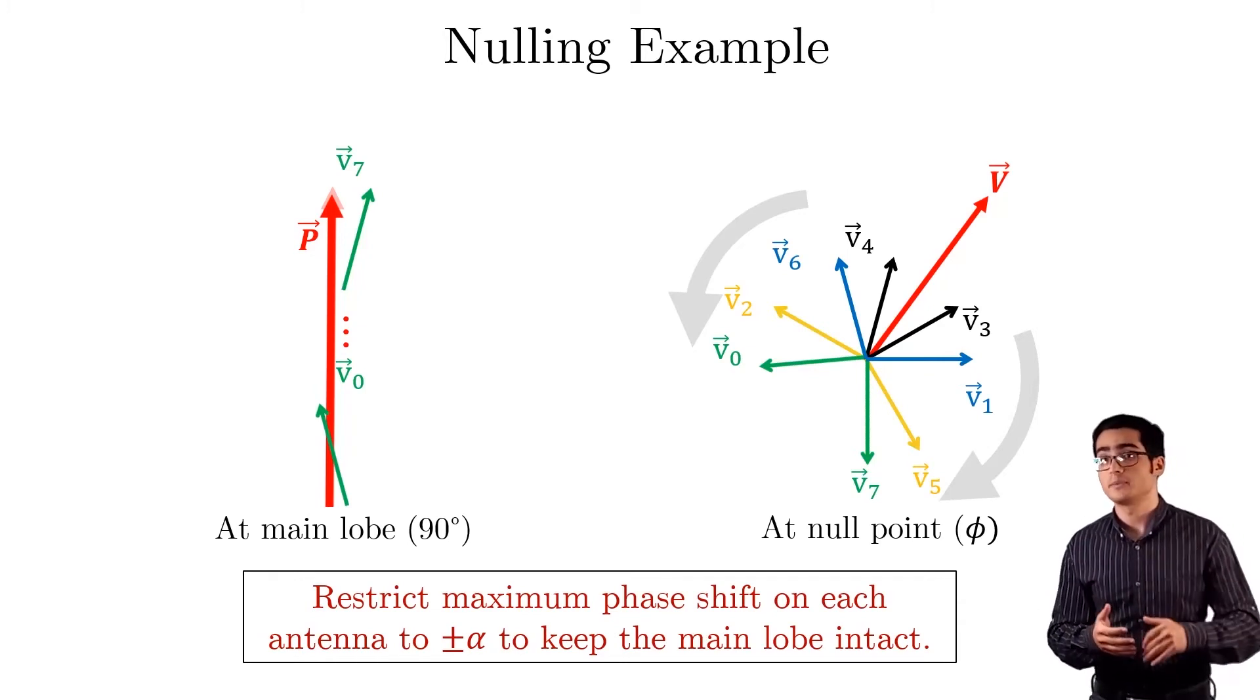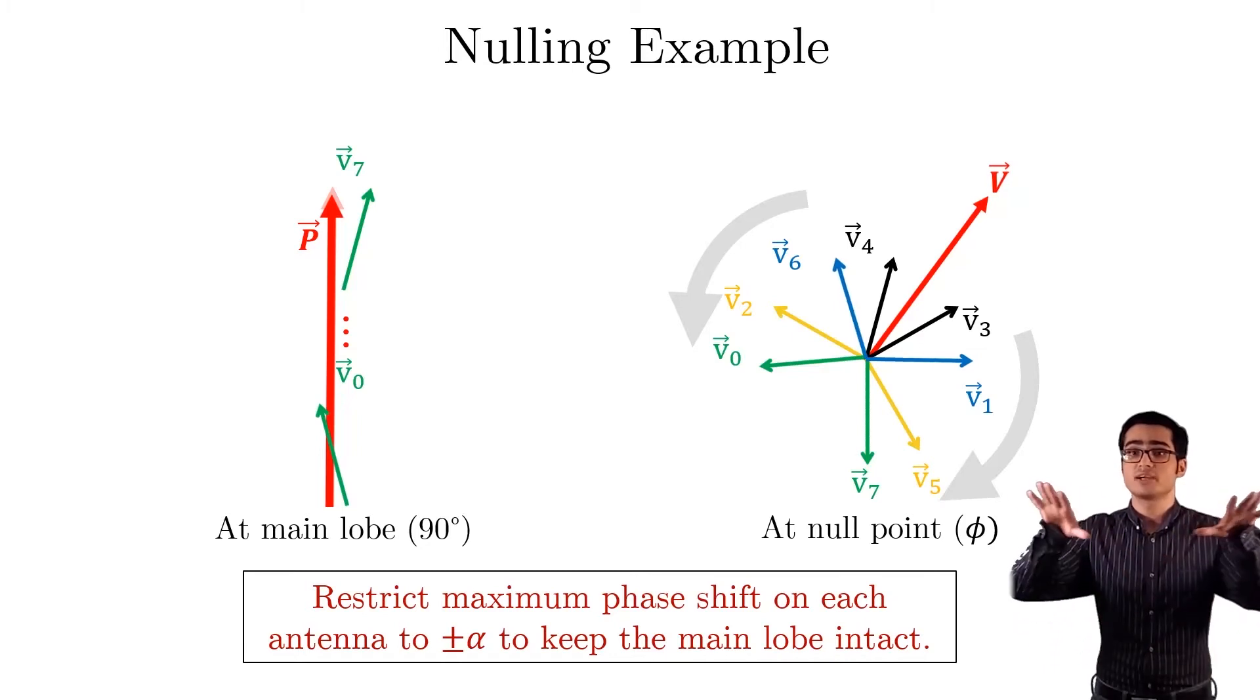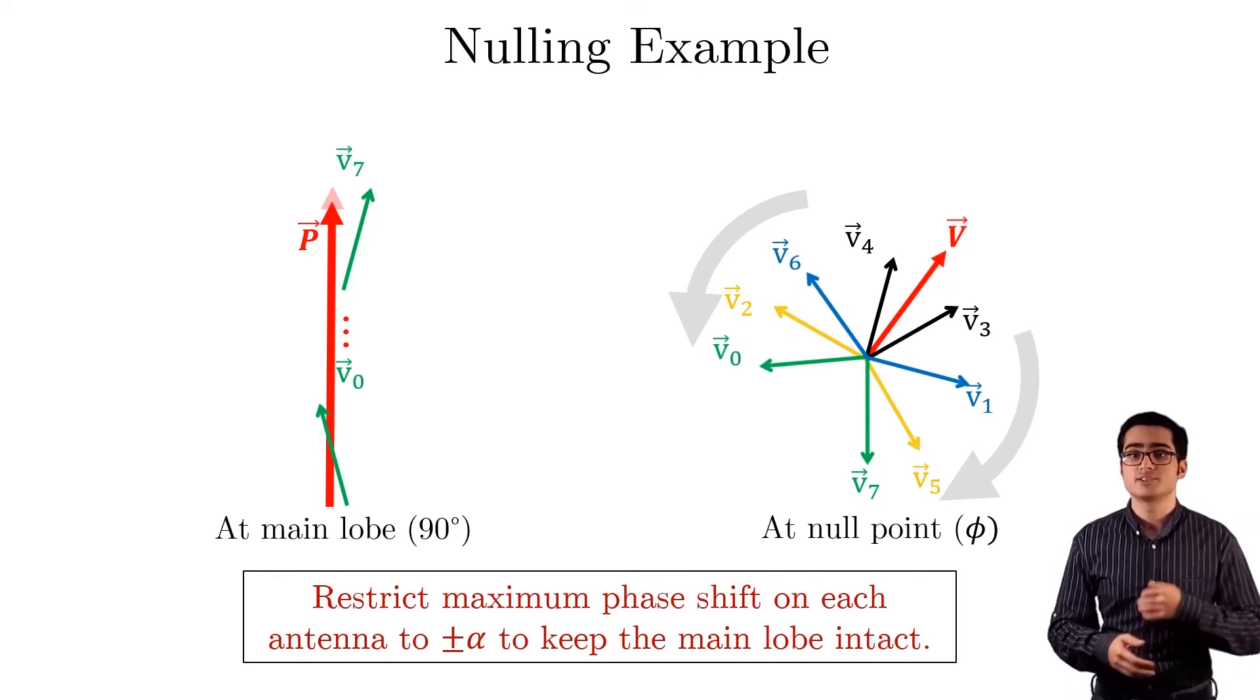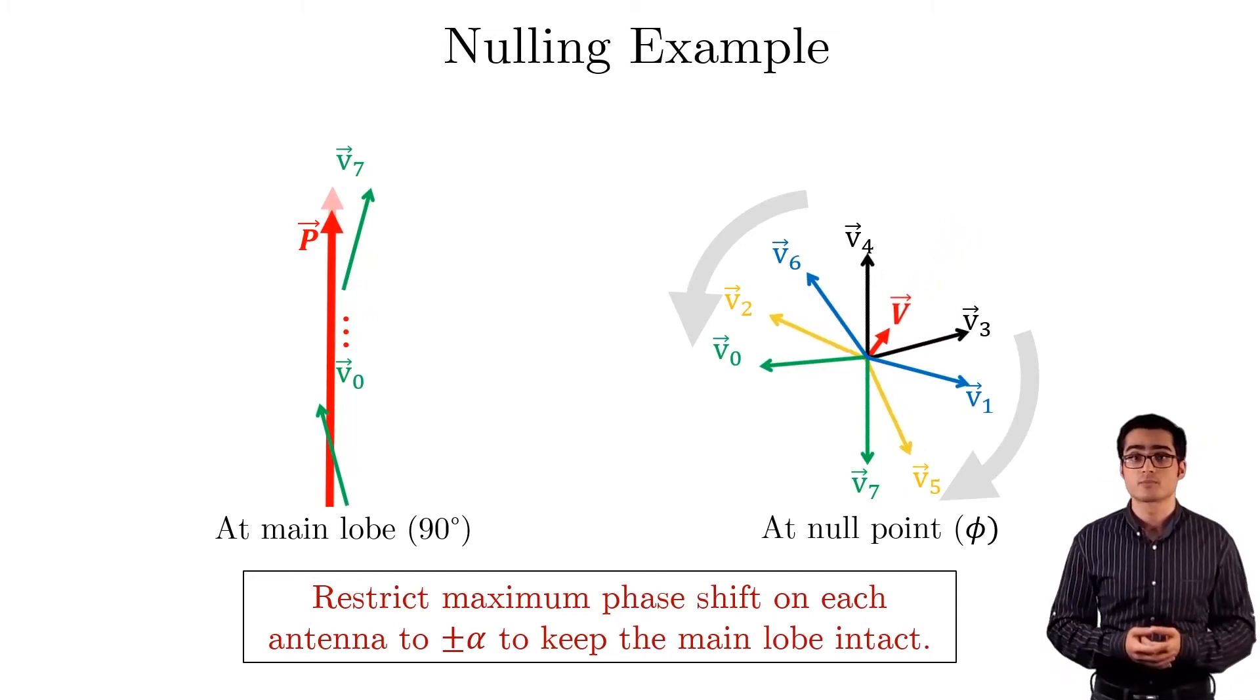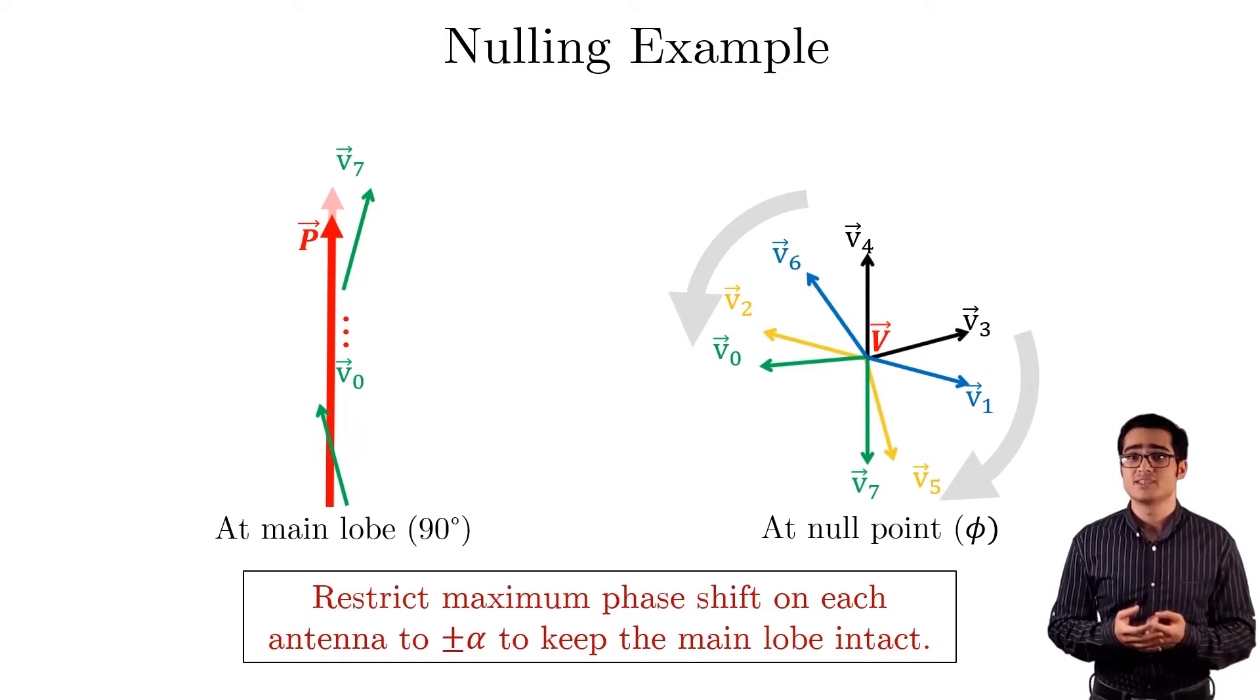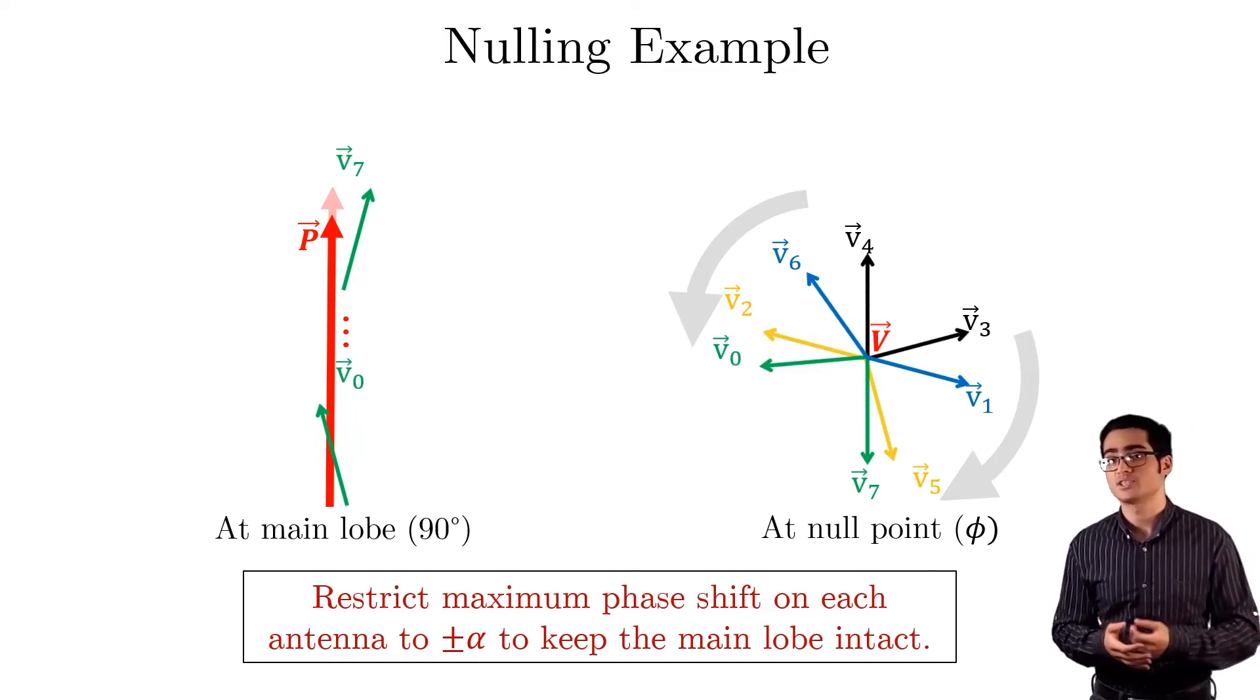We then choose another pair, say the blue ones, and again go ahead and rotate both its vectors as much as possible towards the direction opposite to v. We continue this process until we achieve a null, v equal to zero, or we run out of pairs. The nice thing about this algorithm is that it works with limited hardware controls over the phase shifts, since it can be implemented with only two phase changes, plus or minus alpha.